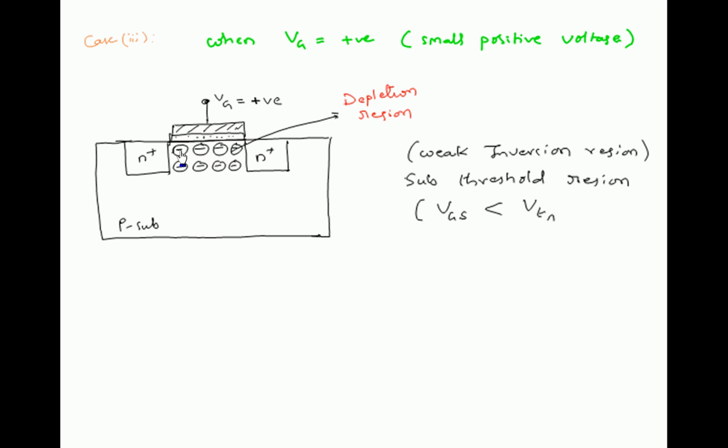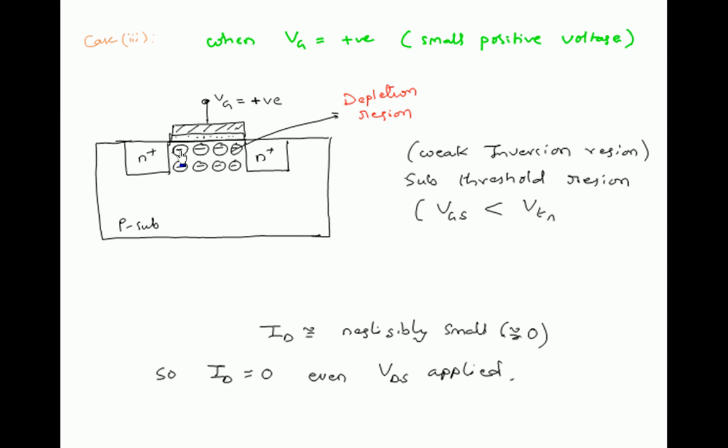The gate voltage being applied is less than the threshold voltage. In this case, drain current is negligibly small, so we assume it as zero. Even if VDS is applied, the resulting current is zero.